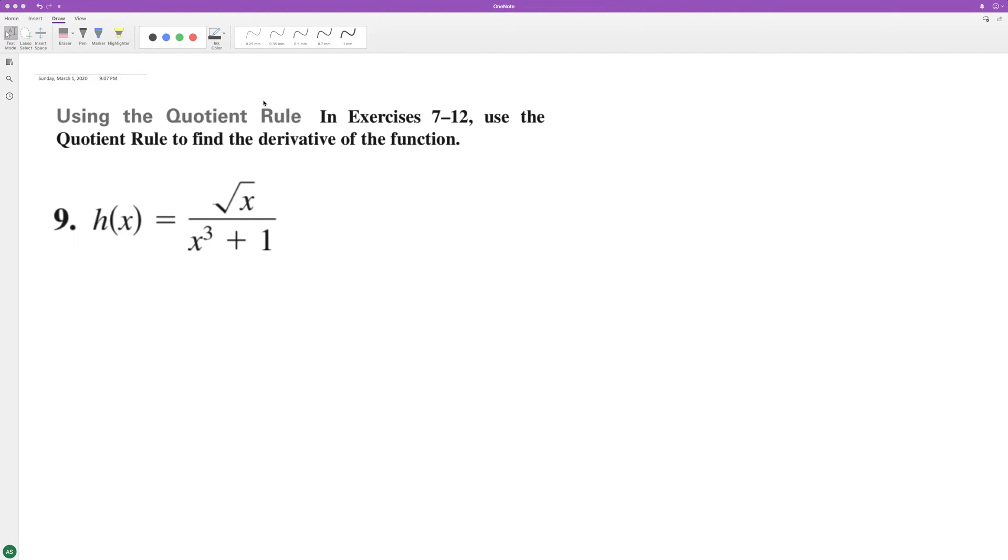To find the derivative of the following, we'll use the quotient rule. This is the same thing as x raised to the one-half over x cubed plus 1. Take the derivative of the numerator, so one-half x raised to the negative one-half, times the denominator.